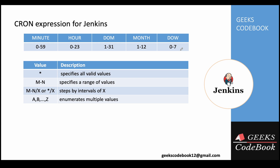We use five sections: minute, hour, day of month, month, and day of week. These fields can have different values. In general, minute can have 0 to 59, hours 0 to 23, day of month 1 to 31, month 1 to 12, and day of week 0 to 7 — where both 0 and 7 mean Sunday. You can also define an asterisk, which means all valid values.